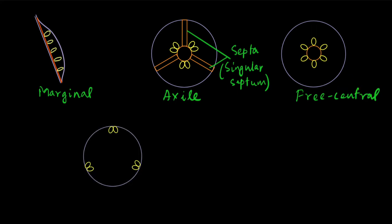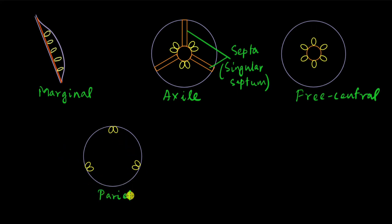In the next type of placentation, instead of being attached to something at the center, the ovules are attached at the periphery — at the wall of the ovary. Hence this is called parietal placentation, because in Latin 'parietal' refers to something related to a wall.